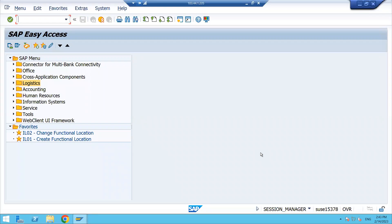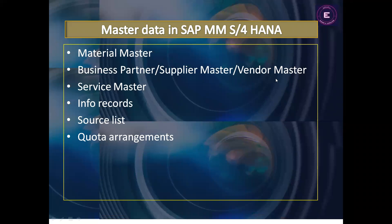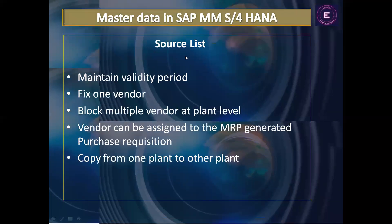Hello everyone, today we will discuss source list. We have already started master data and we discussed material master, business partner, supplier master, vendor master, and info record. Today we will discuss source list — what are the advantages, why do we maintain it, and what settings we may require. We will discuss in detail.